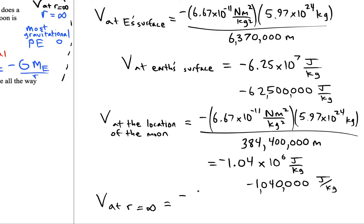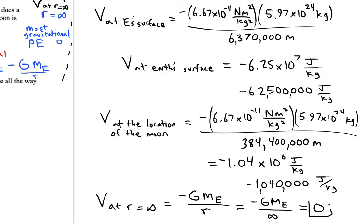Notice the formula is negative G times Earth's mass divided by r. When r is infinity — an infinitely large number — even with these values plugged in, the gravitational potential is approximately 0.